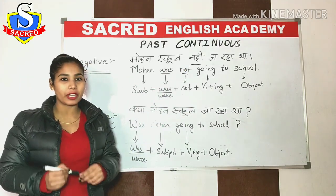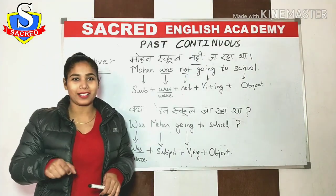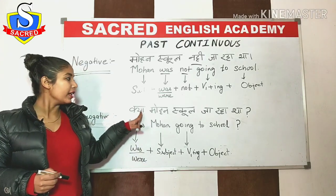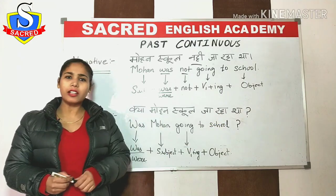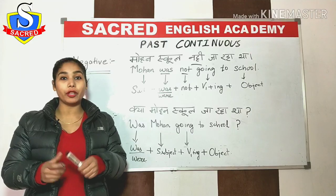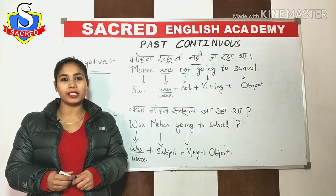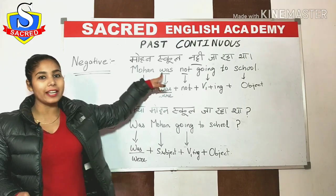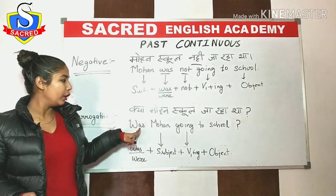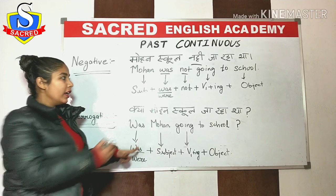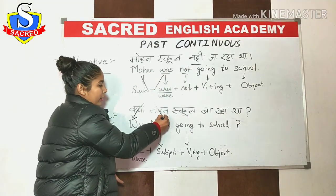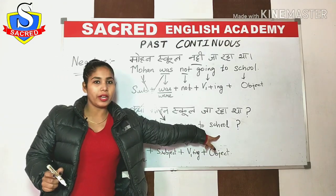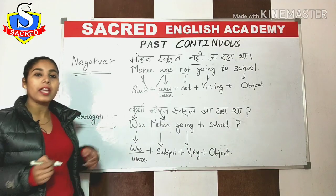Next we have interrogative sentences — questions with a question mark, where you are asking someone something. The example is: Kya Mohan school ja raha tha? For questions, everything remains the same, but we change the position of 'was' and the subject. 'Was', which was in second position, moves to first; and 'Mohan', which was first, moves to second. So it becomes: Was Mohan going to school? — with a question mark at the end.